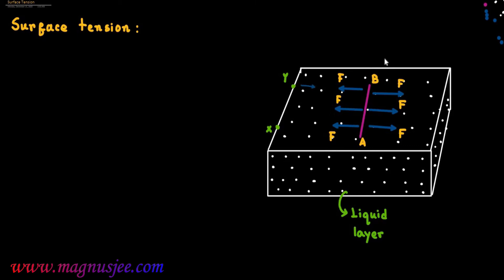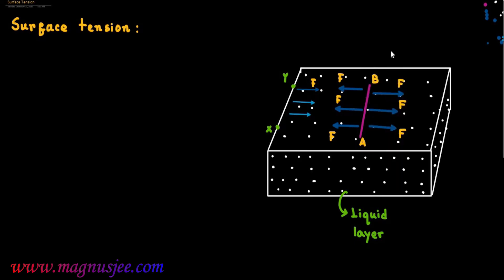We can consider another edge of this liquid layer: X-Y is the edge of this liquid layer. This force also acts at right angles to the imaginary line X-Y on the free surface of liquid at rest. Here, L is the length of the imaginary line or tangent A-B or X-Y.